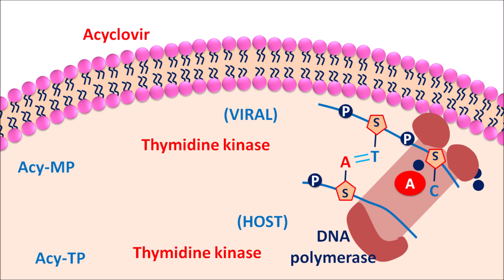In this way acyclovir acts as an anti-herpes agent. To produce its antiviral action, it must be converted into the monophosphate form by thymidine kinase present in the viral cell. In cytomegalovirus, this thymidine kinase is not present — that is why acyclovir is ineffective in cytomegalovirus infections.